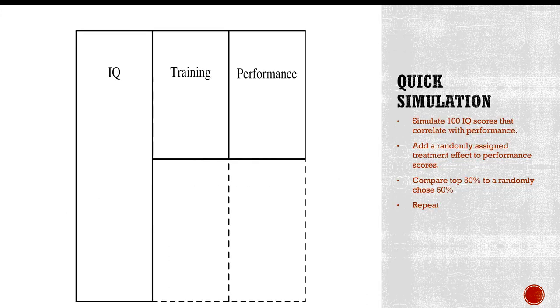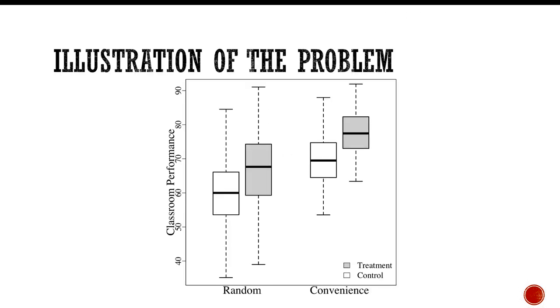So here's a quick simulation that I did. What I did was I simulated a hundred IQ scores that correlated with training and performance. And then what I did was I added a randomly assigned treatment effect. Oh, I'm sorry. I skipped ahead on that bullet point. So I created a randomly assigned treatment effect in the computer. And then I compared the top 50% to a randomly chosen. So basically I selected those who were top 50% of IQ and compared the training effect on performance versus a random sample of the same size. And then I did this like 10,000 times.